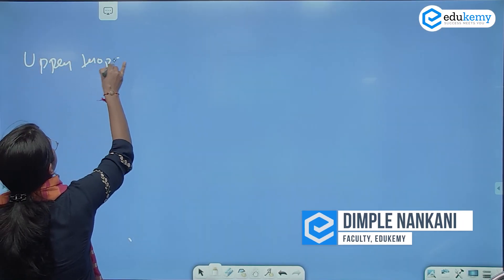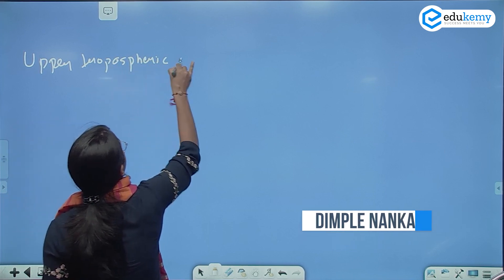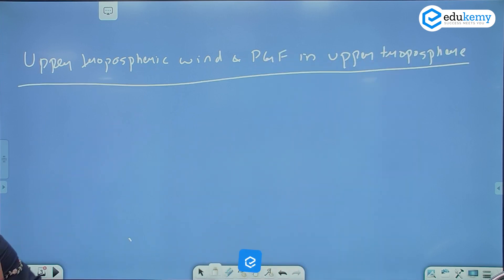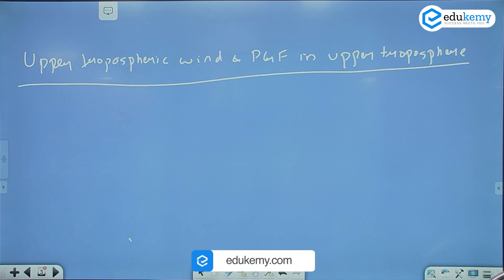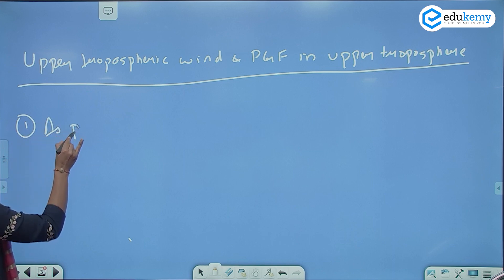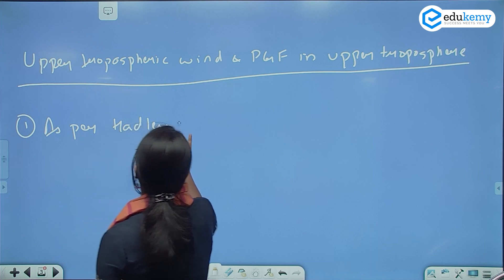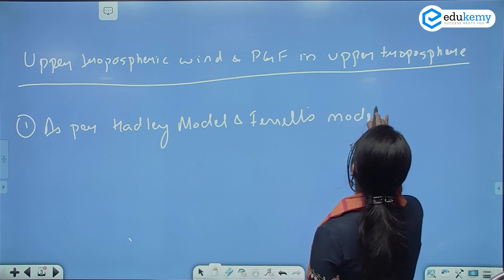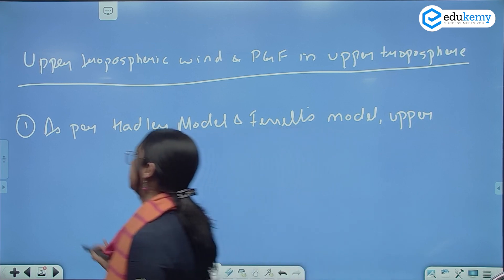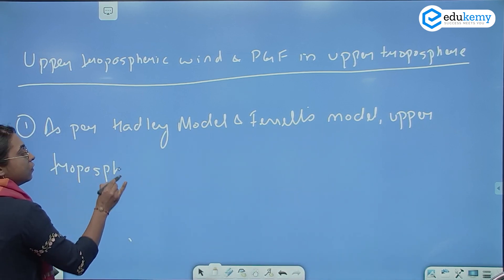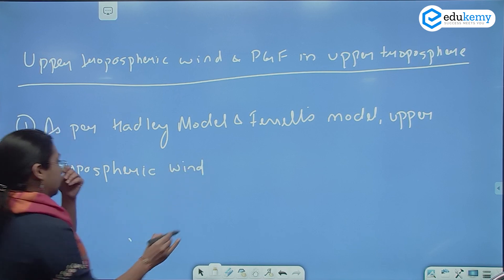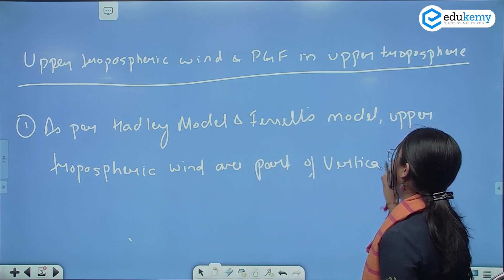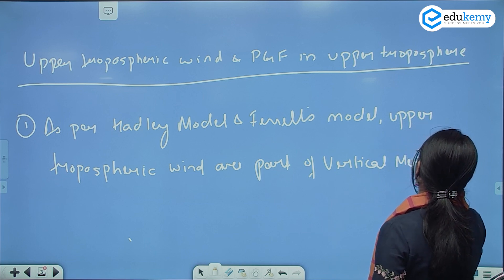Today we look at upper tropospheric wind and the PGF in upper tropospheric wind. What is the PGF in the upper troposphere? As per the Hadley model and the Ferrell model, the upper tropospheric winds are part of the vertical meridional cell.